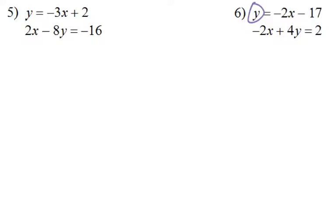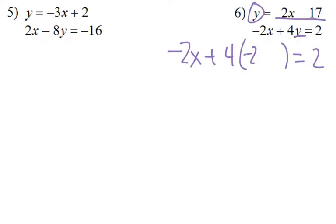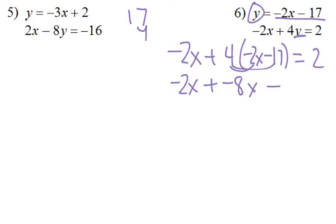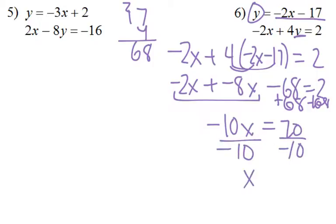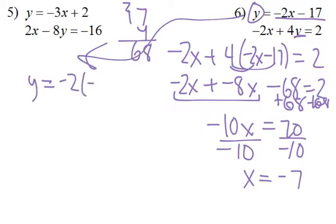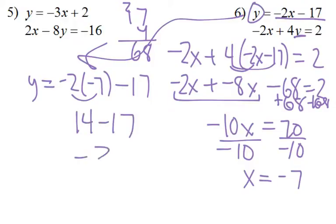Same for number 6. y equals that whole piece, so in my equation I replace that y with negative 2x minus 17 because they're the same. So we get negative 2x plus negative 8x minus 4 times 17 is 68, equals 2. Those combined to make negative 10x. We add 68 to get 70, then divide by negative 10, and we get x equals negative 7. Taking this equation now, knowing x is negative 7, we simplify: negative 2 times negative 7 is positive 14, minus 17 is negative 3. So y equals negative 3. My answer is negative 7, negative 3.